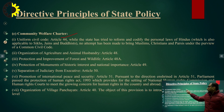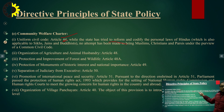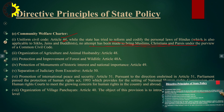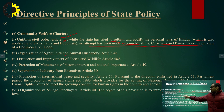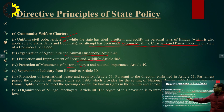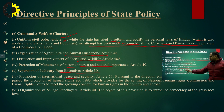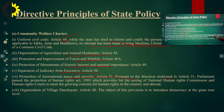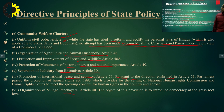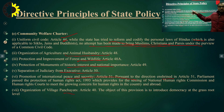The community welfare charter includes a uniform civil code as provided in Article 44. While the state tried to reform and codify the personal laws of Hindus — also applicable to Sikhs, Jains, and Buddhists — no attempt has been made to bring Muslims, Christians, and Parsis under the preview of a common civil code. Other provisions include organization of agriculture and animal husbandry, protection and improvement of forest and wildlife, protection of monuments of historical interest, separation of judiciary from executive under Article 50, promotion of international peace and security, and organization of village panchayats.